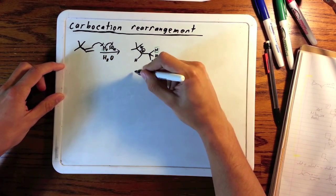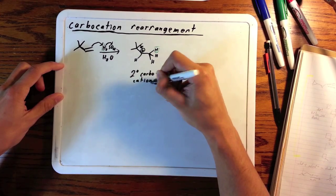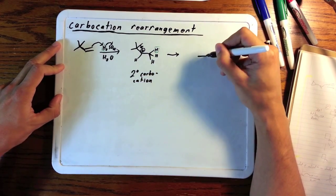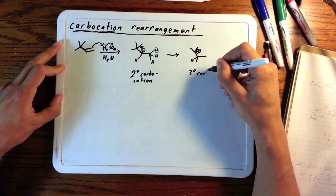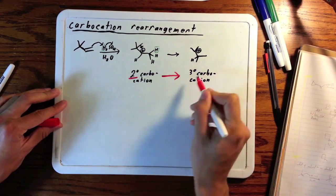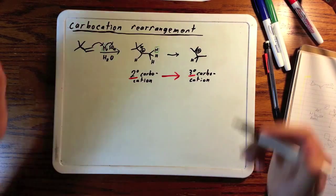Now one of the methyl groups directly next to the carbocation moves with its electrons and bonds to that carbon that previously had an empty orbital. The net result here is that we've gone from a secondary carbocation to a tertiary carbocation. We know that because of hyperconjugation, tertiary carbocations are much more stable than secondary ones.